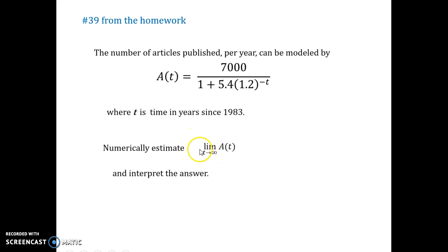So, number of articles is going to equal this function. Numerically estimate the limit as t goes to infinity and interpret the answer. So, since t is going off to infinity, we're just going to say, in the long run, this might be 50 years from now, 100 years from now. We don't know. So, we need to figure out what this limit is and then interpret it. So, again, we're going to have this exponential piece right up here. And so, it's going to be the deciding factor.